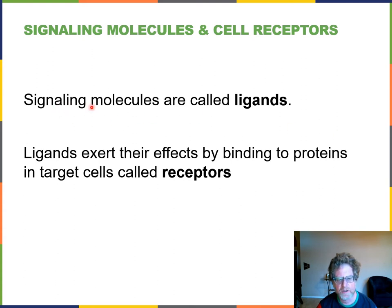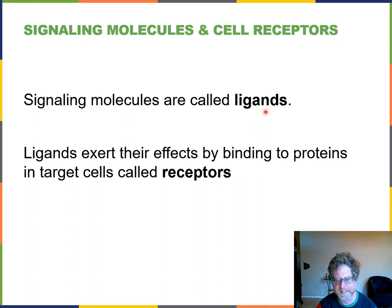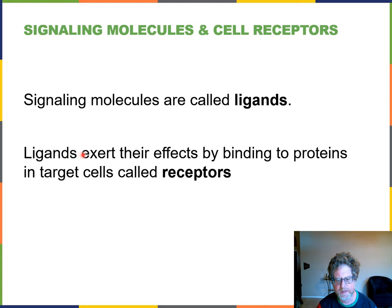Signaling molecules are sometimes called ligands — a more general word than hormone, neurotransmitter, or antigen. A ligand is something that binds to a receptor. Ligands exert their effects by binding to a protein called a receptor, which is usually on cell membranes but sometimes not.